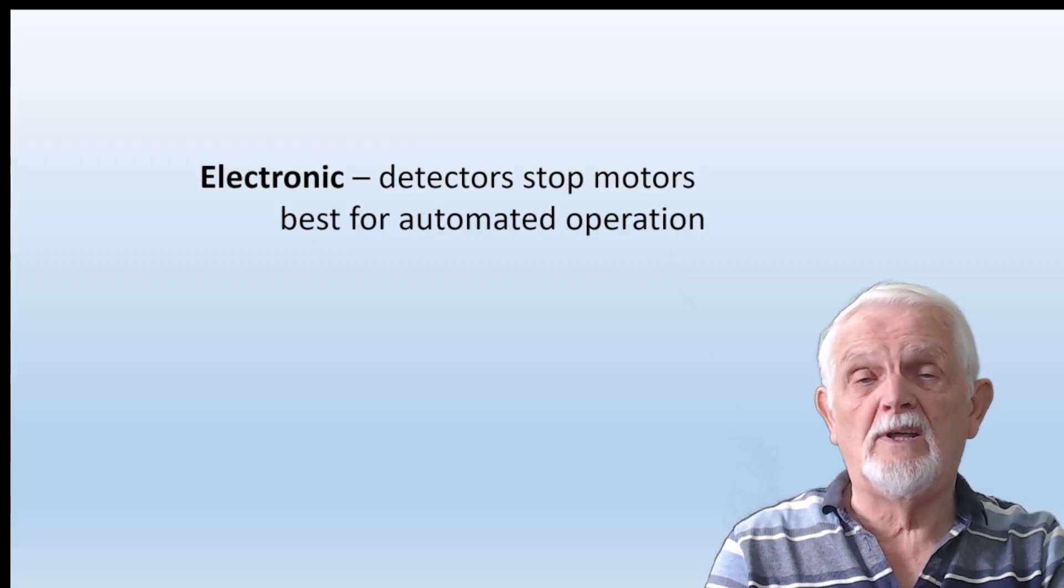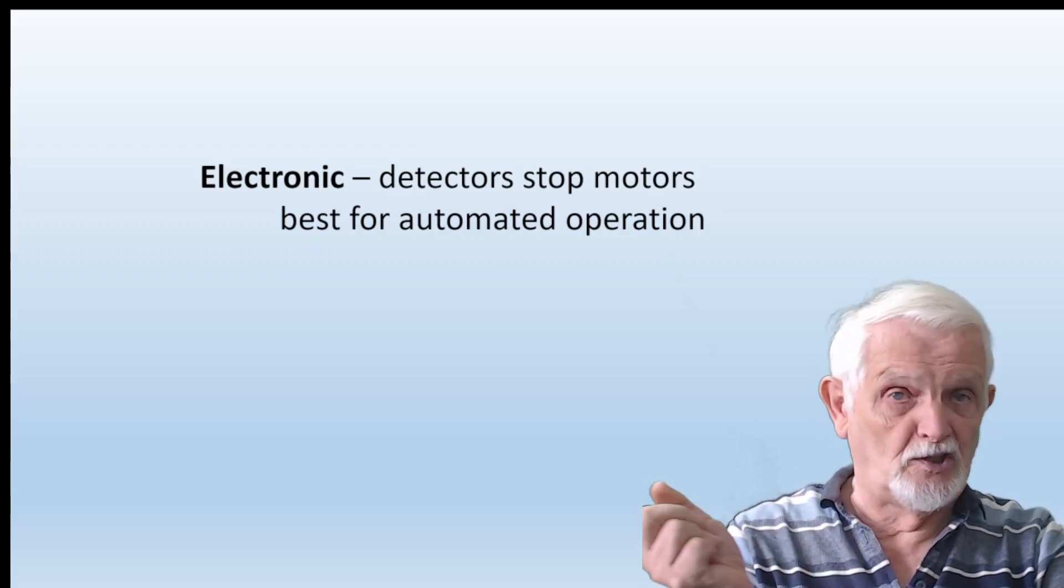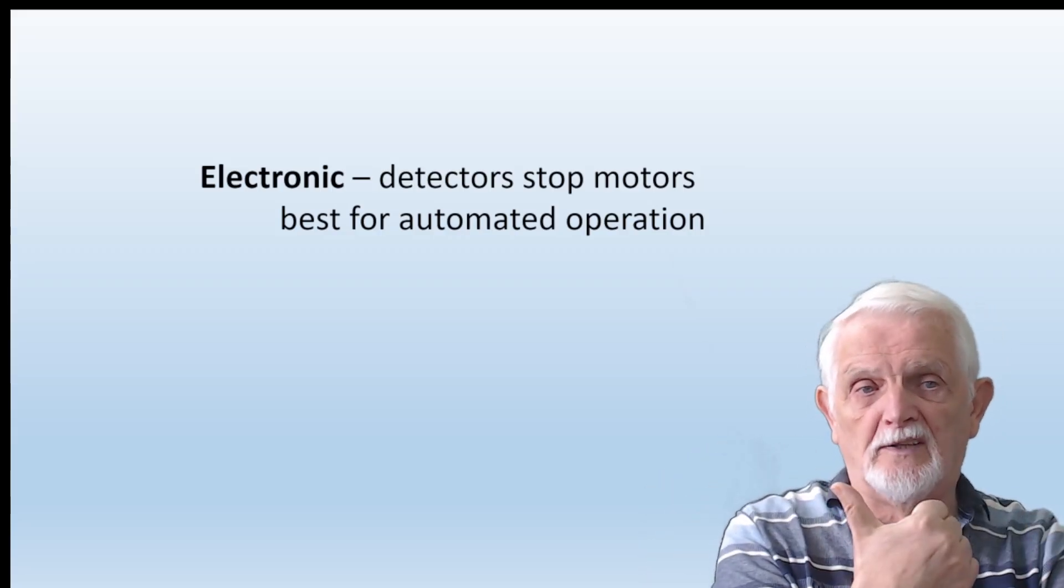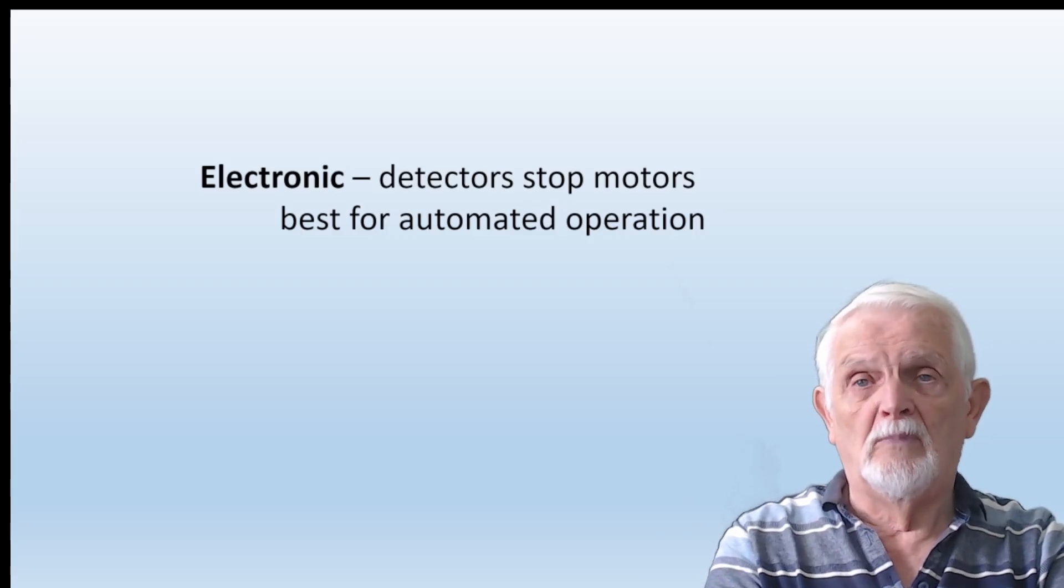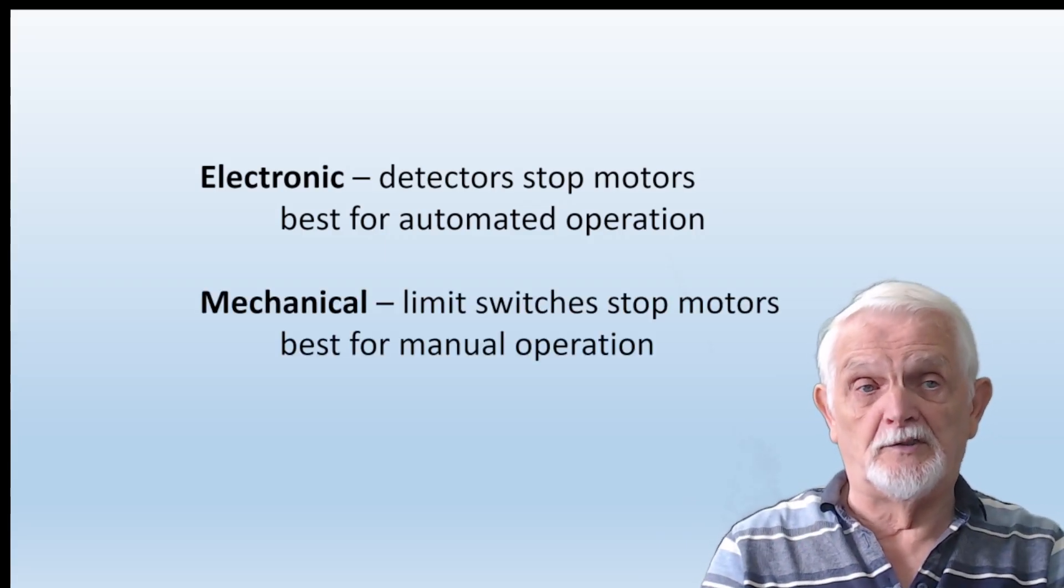But if we don't have that, all we want to do is have a simple switch. Throw the switch one way, you get mechanical movement one way. Throw the switch the other way, mechanical movement in the opposite direction. Then we haven't got the electronic means to do it and that's where limit switches come in.